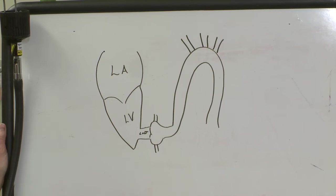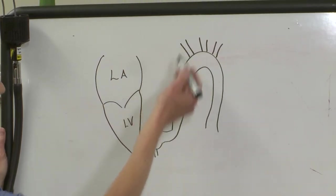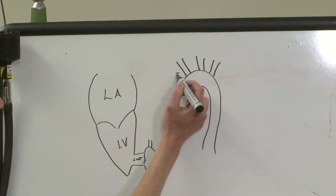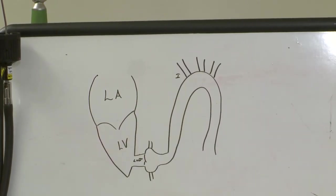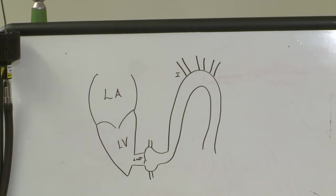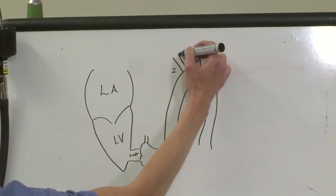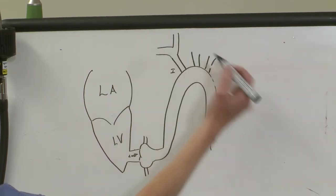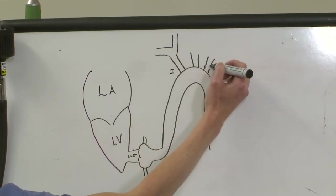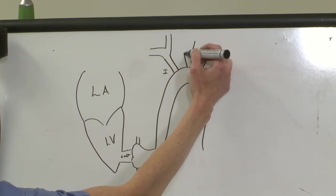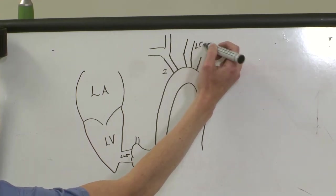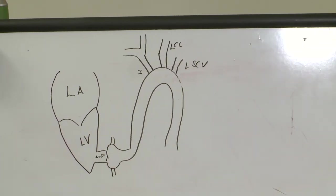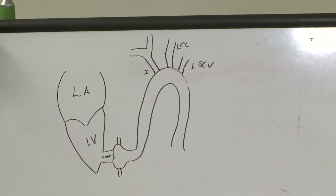It's really important that you know this anatomy. So first let's talk about your first branch. What's the name of that? So this is going to be your innominate. Don't say brachiocephalic, make sure you say innominate to your clinicians. Next, this breaks off into the right common carotid and the right subclavian. This is going to be your left common carotid and this is going to be your left subclavian. Okay, so make sure you know this anatomy.